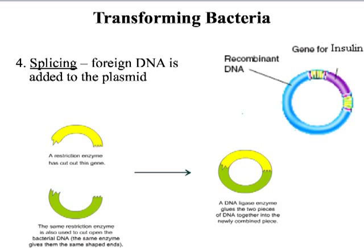Then we do something called splicing. Splicing is when we put the foreign DNA — in this example, our gene for insulin — into our bacteria plasmid. All of the original bacteria plasmid is there, and then this foreign DNA is just stuck into it.